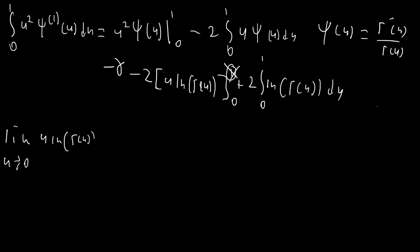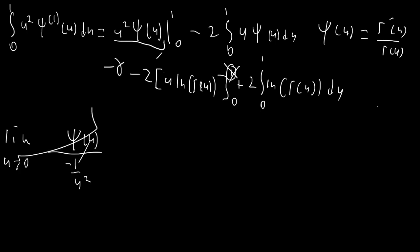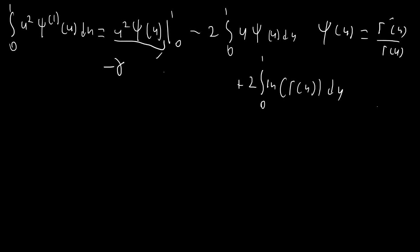So that boundary term also disappears. All that remains is the integral I₁ = ∫ from 0 to 1 of ln Γ(u) du, and our expression so far is −γ + 2I₁.